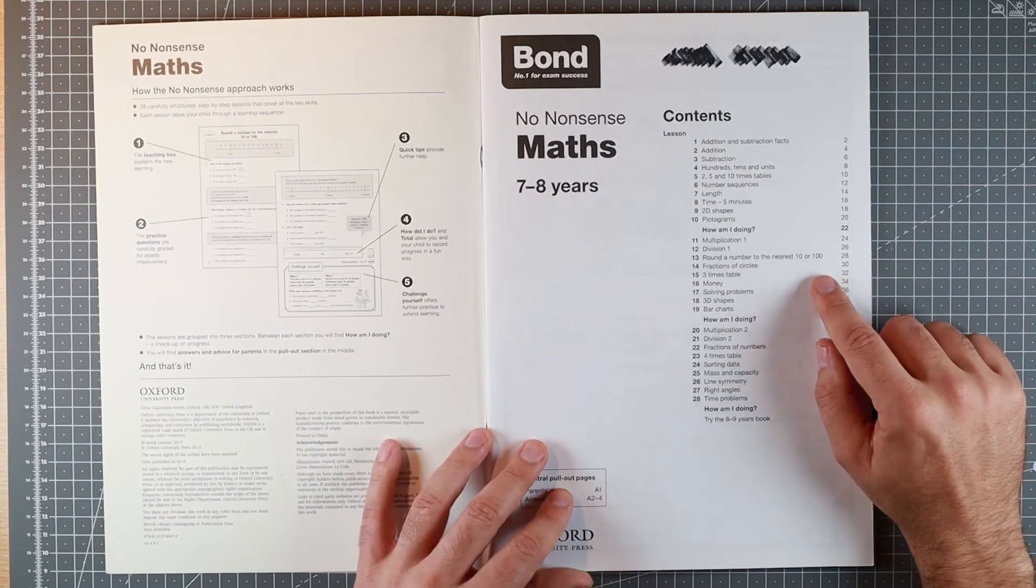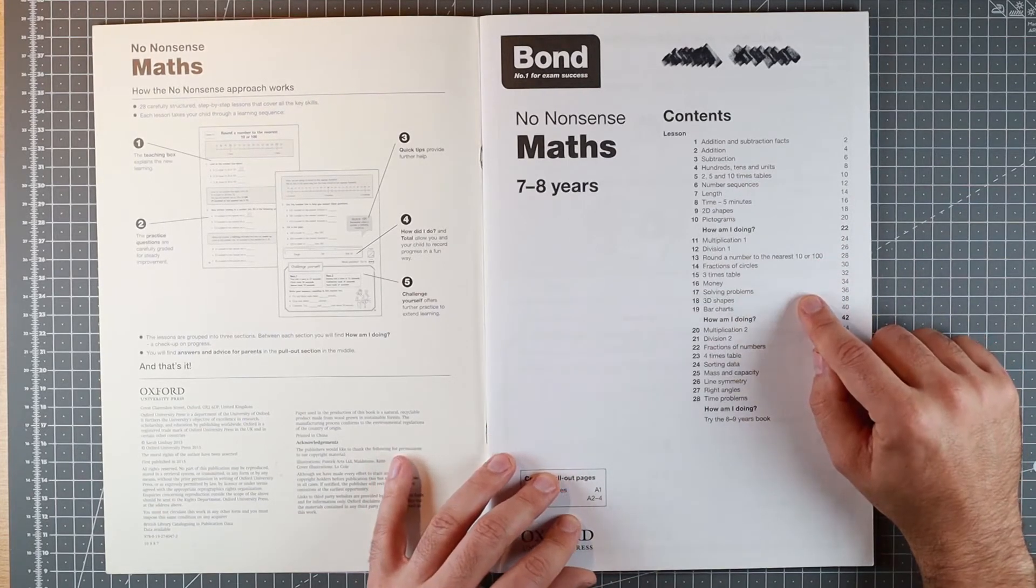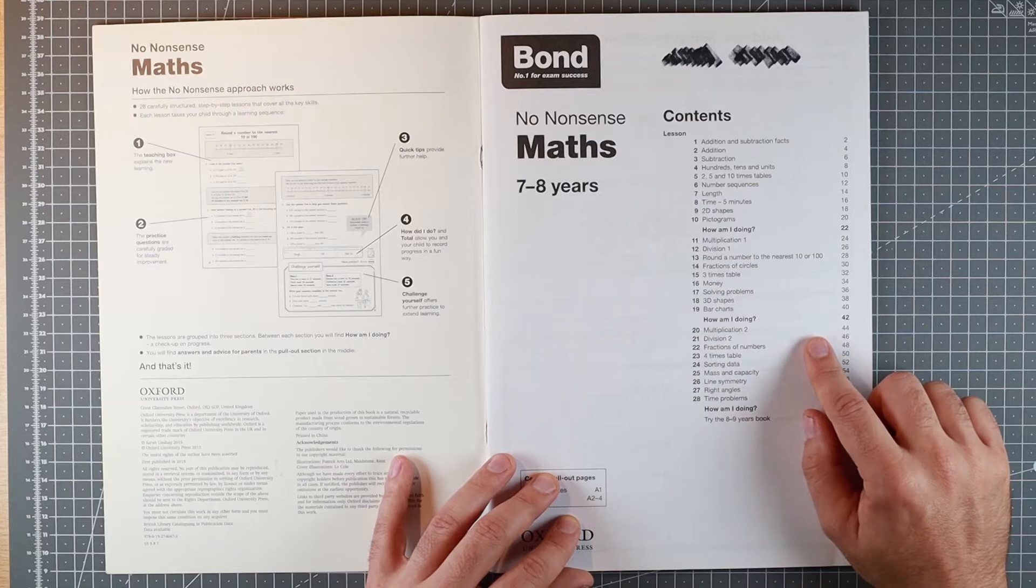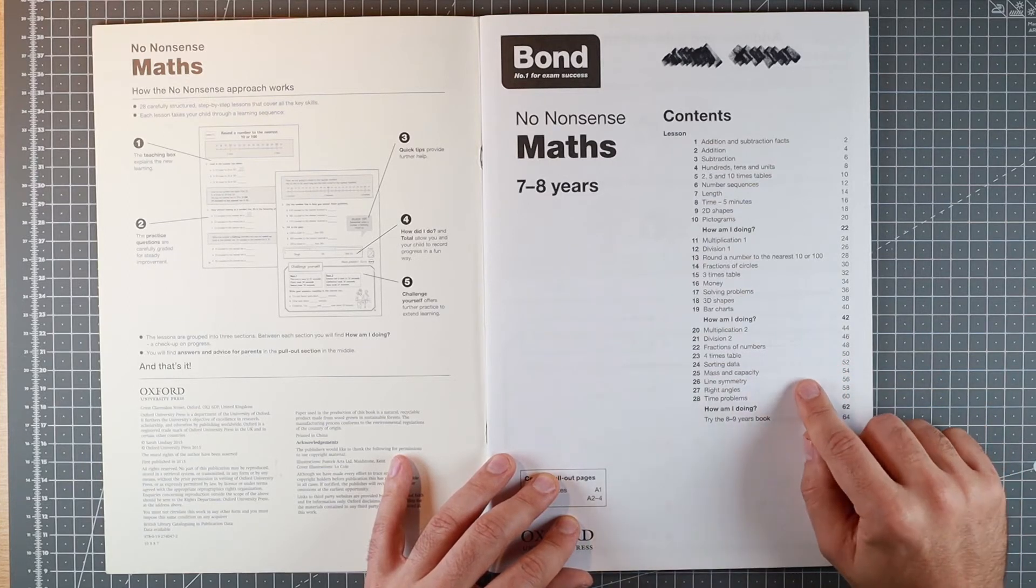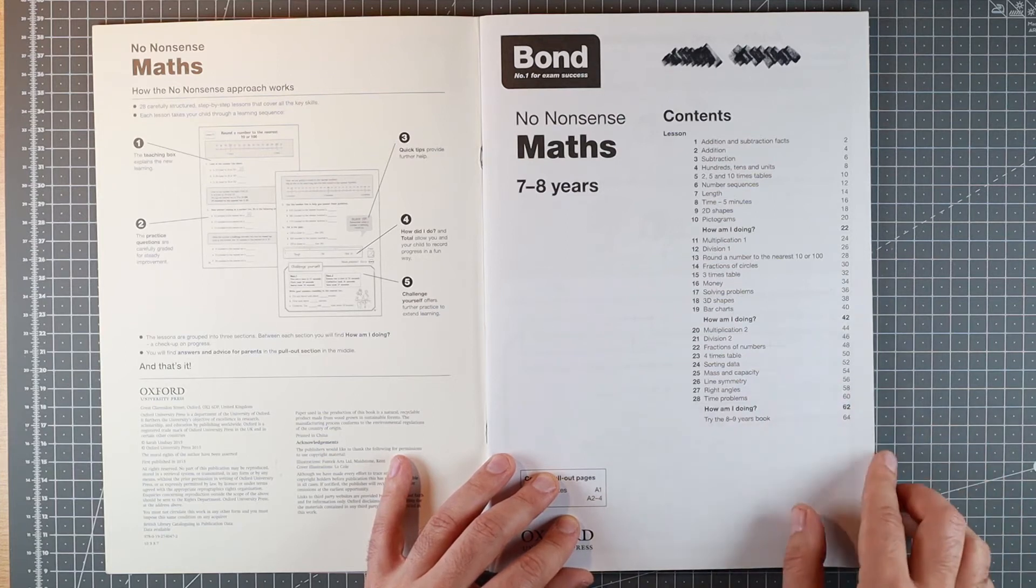Multiplication, division, money, 3D shapes in the second. More multiplication, more division, fractions, numbers, sorting data, mass capacity, line symmetry, and a whole bunch of other topics in the third.